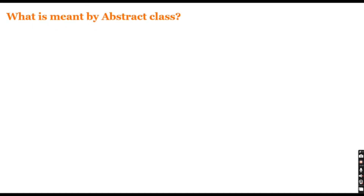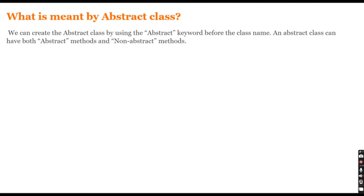Let's understand what is meant by an abstract class. We can create an abstract class by using the abstract keyword before the class name. To declare an abstract class we need to use the extra keyword 'abstract' in addition to the regular class keyword followed by the class name.